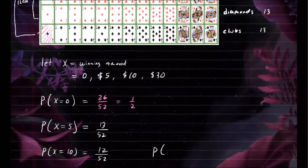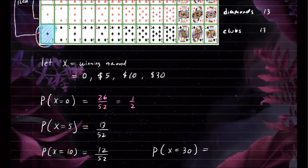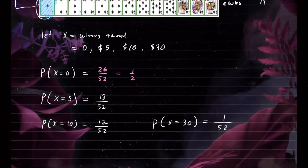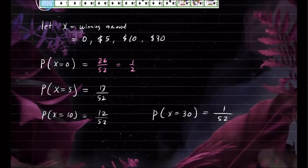The last probability is how you win $30. You get $30 if you draw the ace of clubs — that specific card which is both a club and an ace, giving you the additional $20. There is only one such card out of 52, so the probability is 1 out of 52. These are the probabilities for the corresponding values of the random variable X.